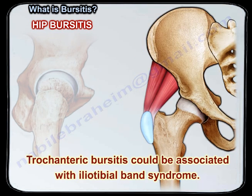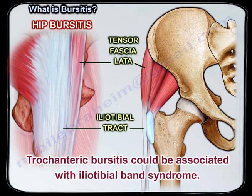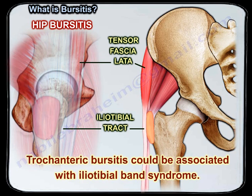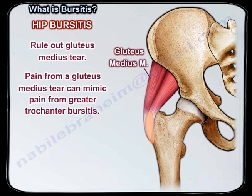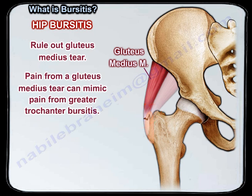Examination will show tenderness over the greater trochanter. Trochanteric bursitis could be associated with iliotibial band syndrome. It is important to rule out gluteus medius tear, as pain from a gluteus medius tear can mimic pain of greater trochanter bursitis.